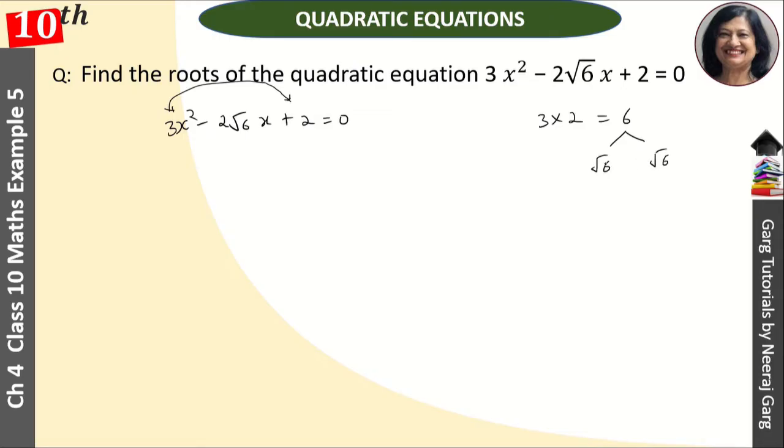And when we add these two sums, what will become? Then, if we add this one, 3x square minus root 6x minus root 6x plus 2 is equal to 0.